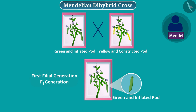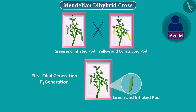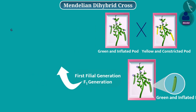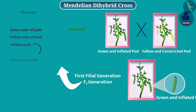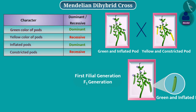Pause the video and identify dominant characters. In F1 generation, the green color of pods was expressed, so this is dominant over yellow color, and pods were inflated. That's why the inflated character is dominant over the constricted character. That is, yellow color and constricted pods are recessive characters.